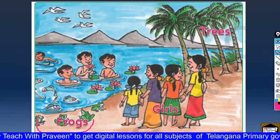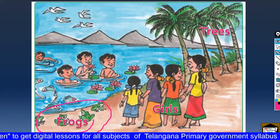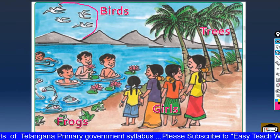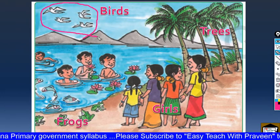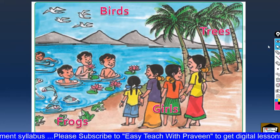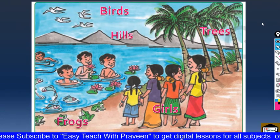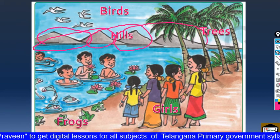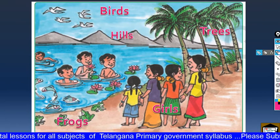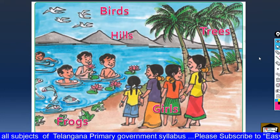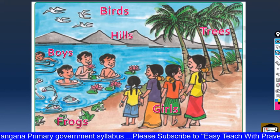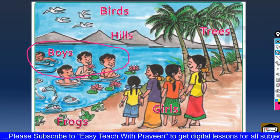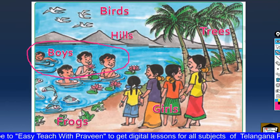Very good! We call them as frogs. These are the frogs. And these are called as birds. These are the puppies — oh boys. Very good! What are they doing? This is called swimming.